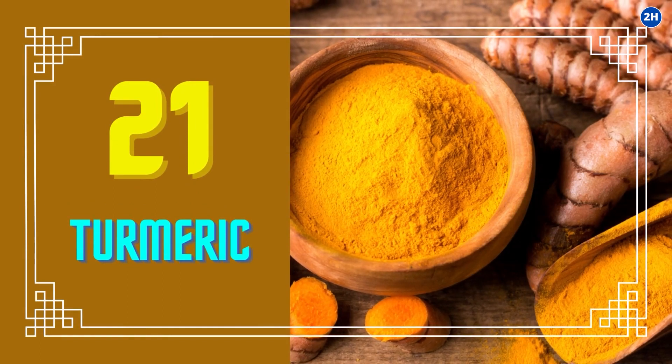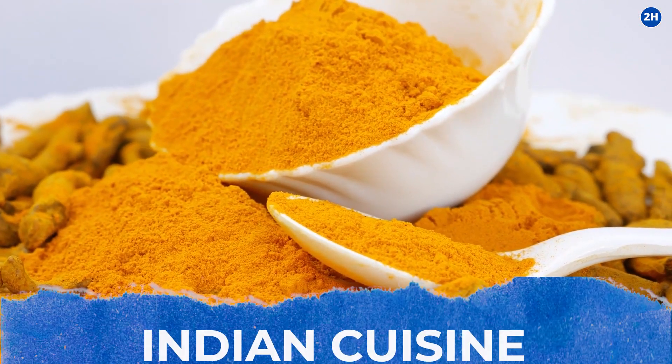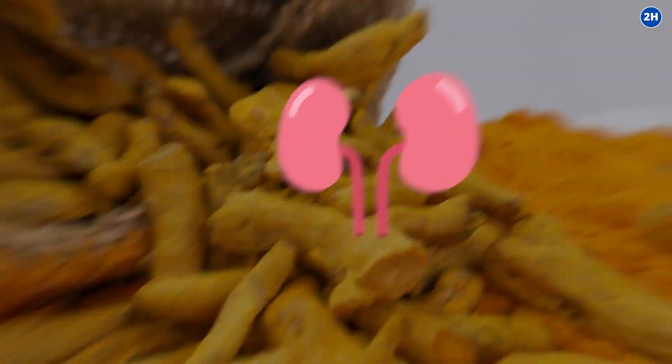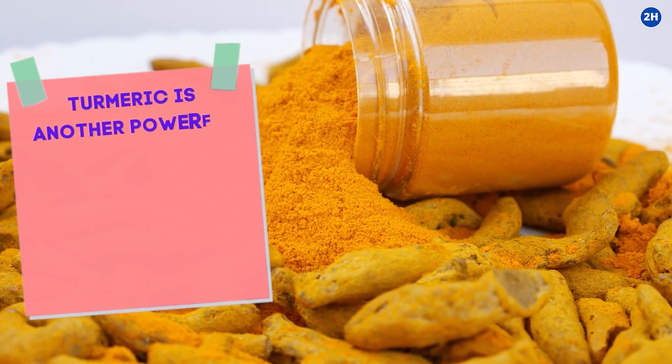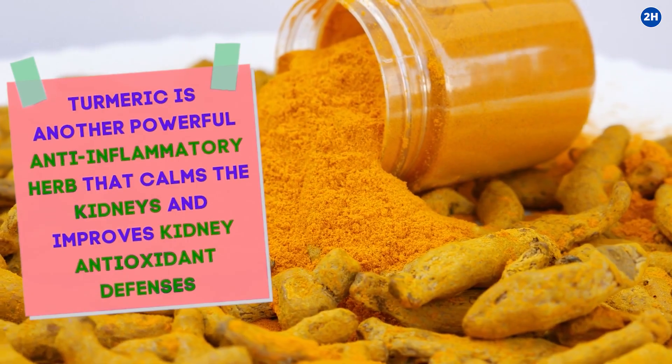21. Turmeric. Turmeric, a delicious spice traditionally added to Indian cuisine, has many health benefits that extend to the kidneys. Turmeric is another powerful anti-inflammatory herb that calms the kidneys and improves kidney antioxidant defenses. It all comes down to anti-inflammatory and antioxidants.